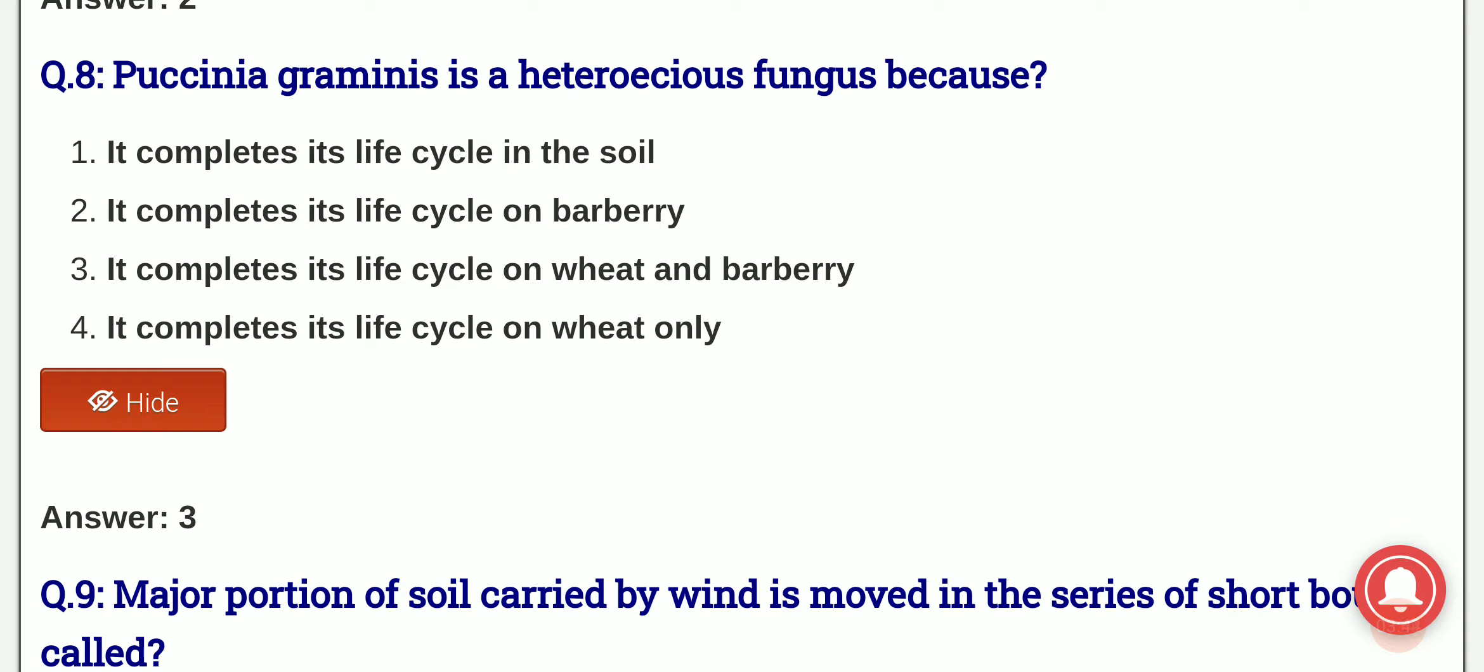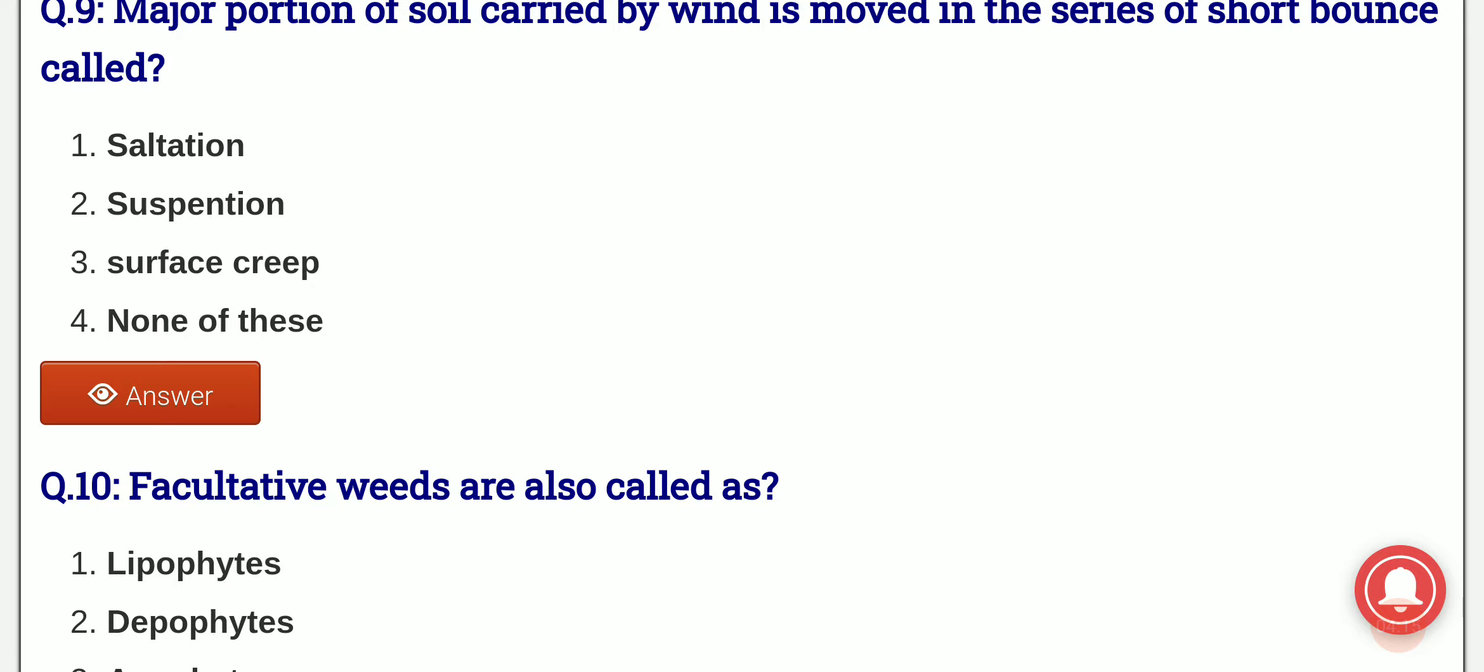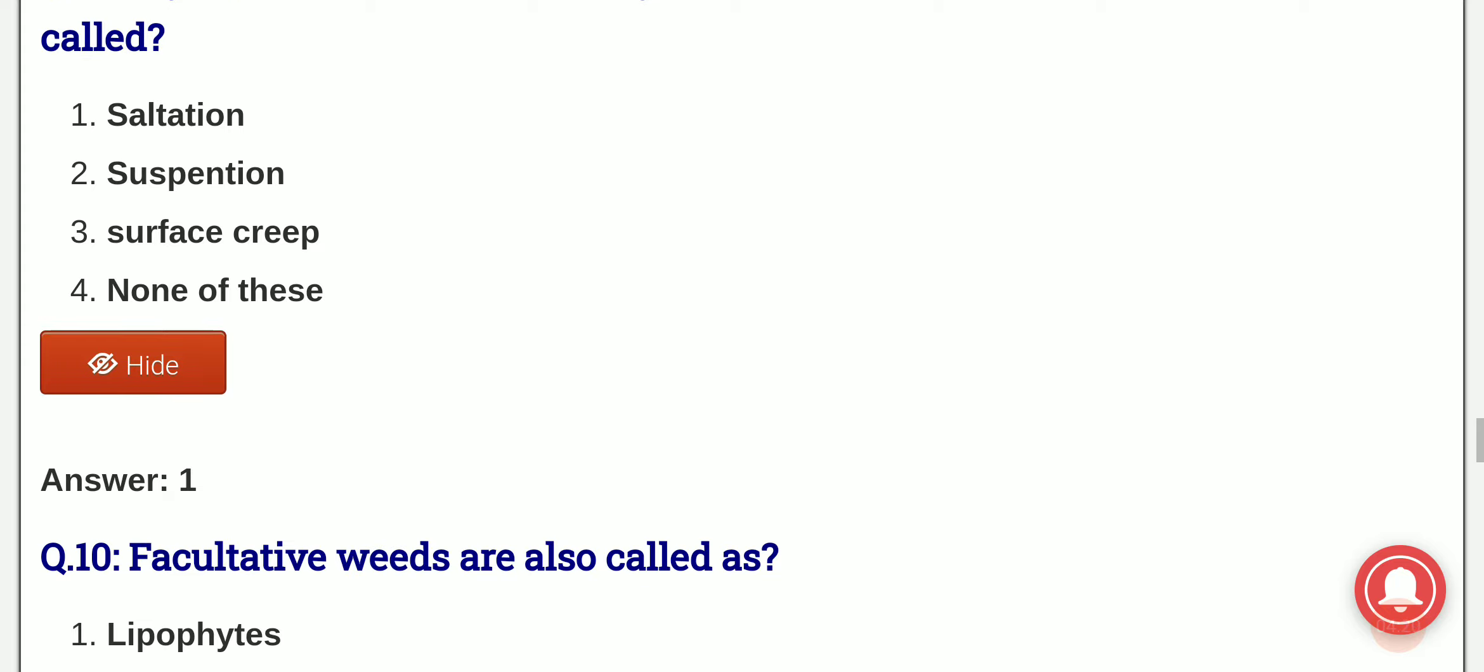Major portion of soil carried by wind is moved in the series of short bounds called: this is a part of soil erosion and when the soil is carried by wind, wind erosion has three steps that is saltation, suspension, and surface creep. So which of the following is the removal of soil with a series of short bounds? Options are saltation, suspension, surface creep, or none of this. And the answer is option 1, that is saltation in the form of short bounds is known as saltation.